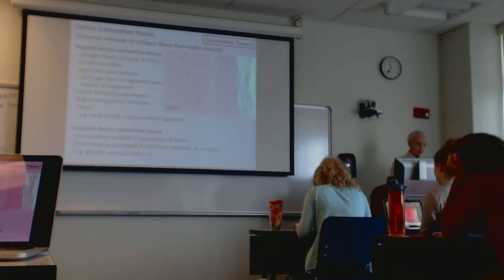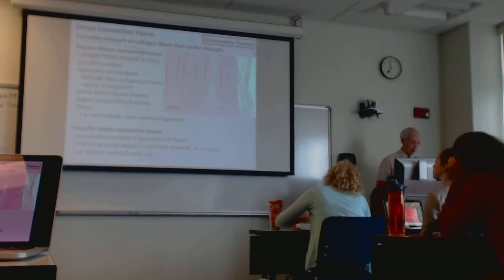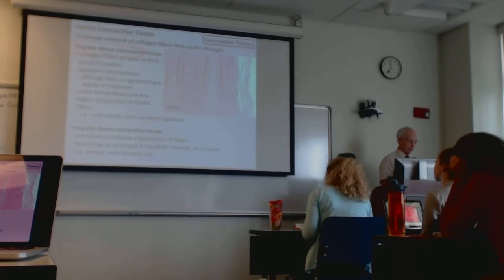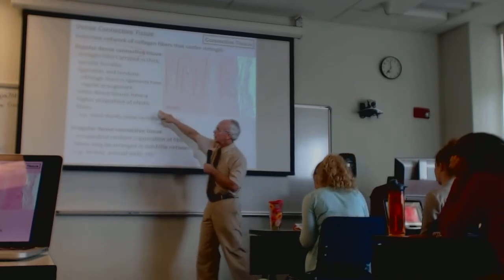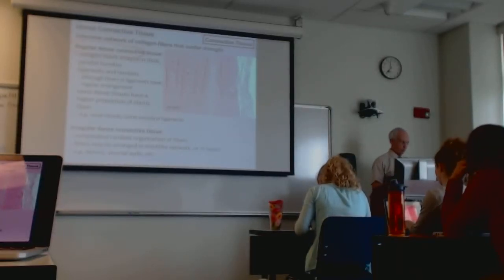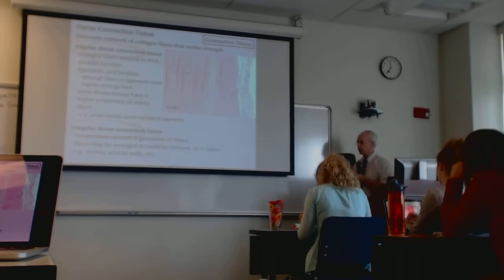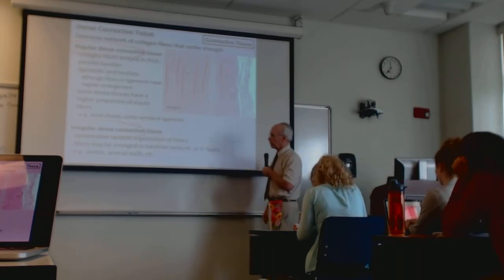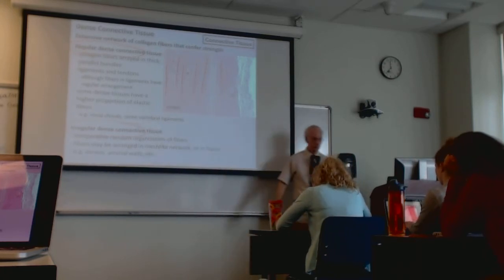Dense regular connective tissue is characterized by a highly parallel organization of fibers — as seen in a tendon. 'Dense' implies the fibers are in high abundance; in many cases you have a hard time even finding cells. The fiber type is predominantly collagen, though certain types of dense regular connective tissue have a relatively high concentration of elastic fibers — vocal cords, for example, have a high concentration of elastin. Dense irregular connective tissue will come up primarily in our discussion of the skin.